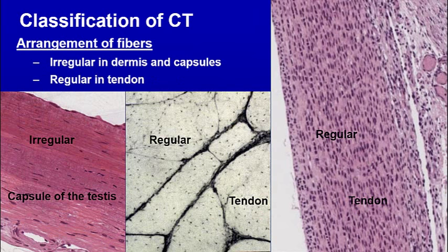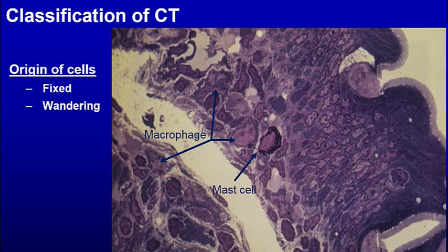The arrangement of fibers is also important. If they're irregular — like in a capsule — the capsule surrounding an organ is irregular because it must withstand pressure from different directions. However, a regular arrangement would be found in a tendon or ligament, where stress is pulled in one direction.